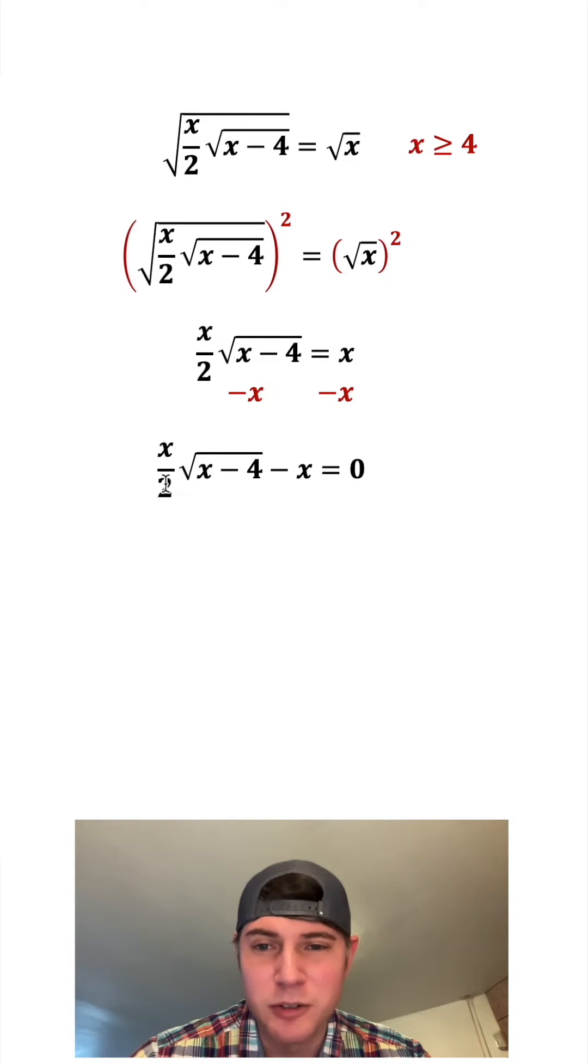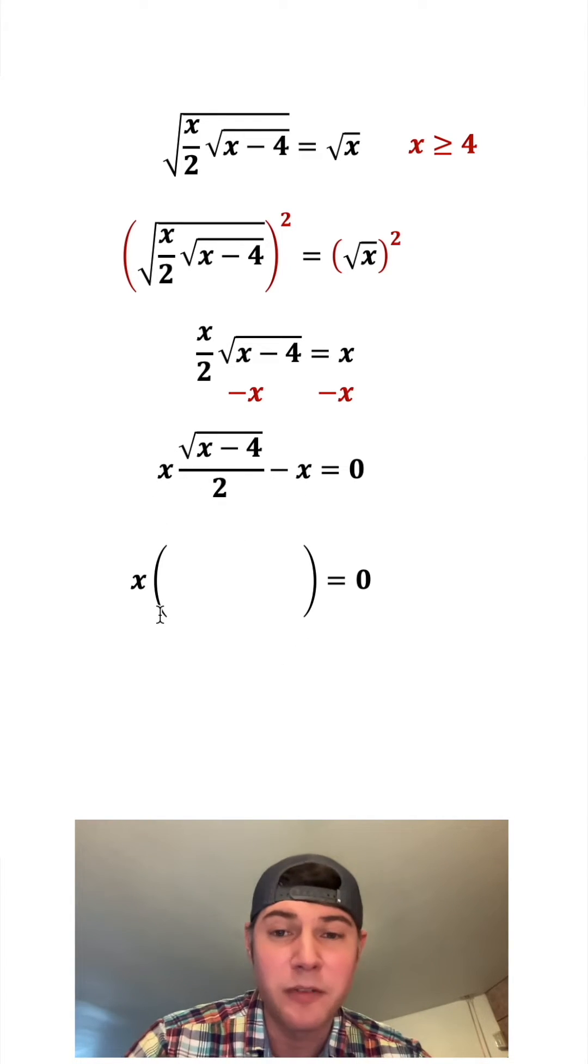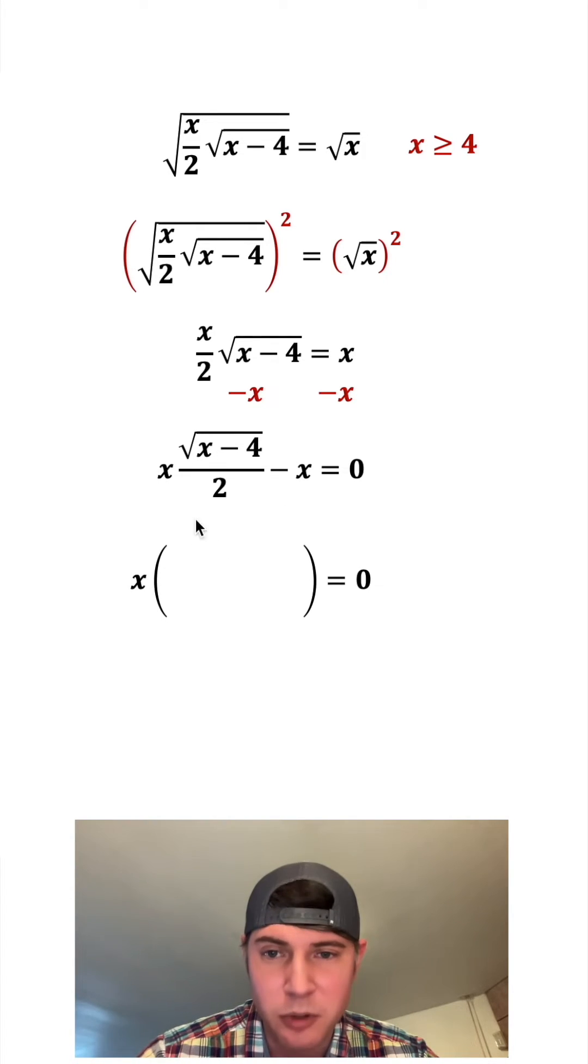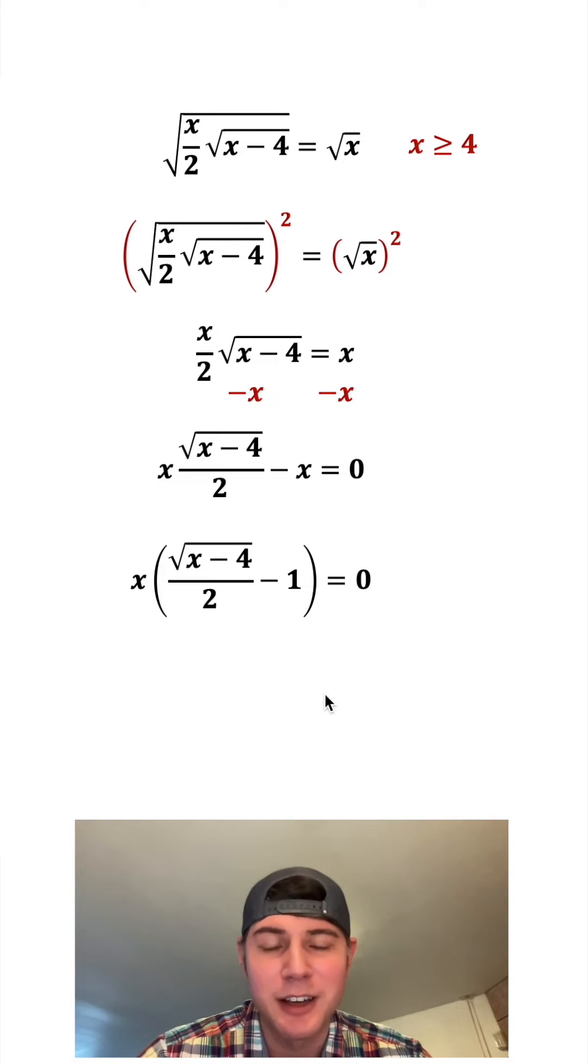I wanna get this outer x alone, so I'm gonna move this divided by two under here. Each of these terms has an x as a factor. I'm gonna factor out that common x. x times what gives me this first term? It's gonna be all this stuff that isn't the x. So this times this gives me the first term, and then we're gonna subtract, and then x times what gives me x? Well, that's one. Now we factored out the x.